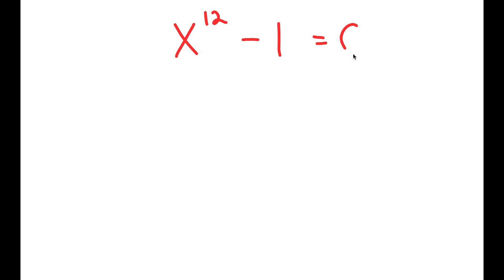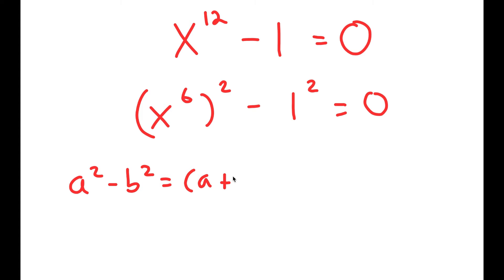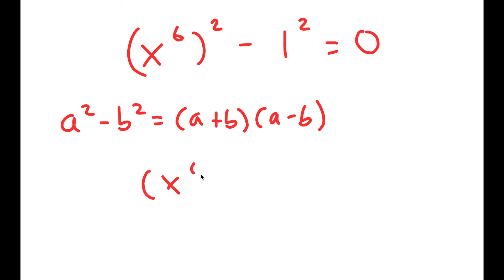In this video, I'm going to solve the equation x to the power of 12 minus 1 equals 0. To solve this, I'm going to first rewrite this as x to the power of 6 squared minus 1 squared equals 0, so I can use the property a squared minus b squared equals a plus b times a minus b. This turns into x to the power of 6 plus 1 times x to the power of 6 minus 1 equals 0.